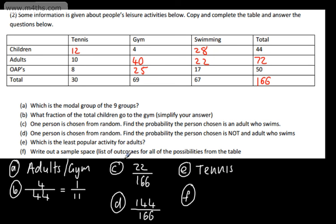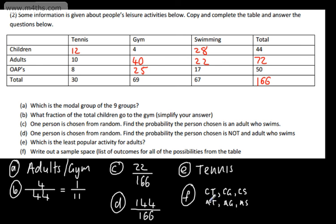Last question: write out a sample space — a list of outcomes for all possibilities from the table. We can write these in abbreviated terms: CT (child tennis), CG (child gym), CS (child swimming), adult tennis, adult gym, adult swimming, OAP tennis, OAP gym, and OAP swimming. That's a list of the possible outcomes. It might be a question you get asked — not massively common, but it tests another skill.